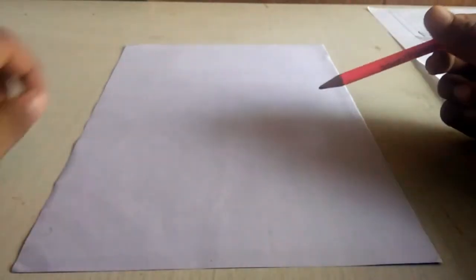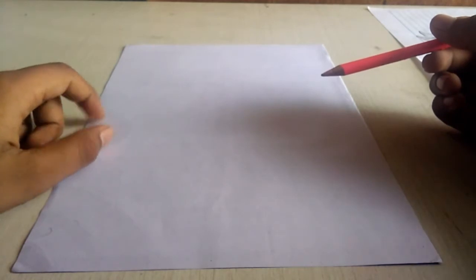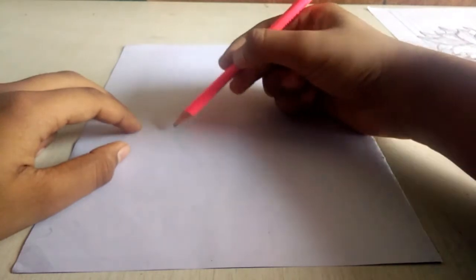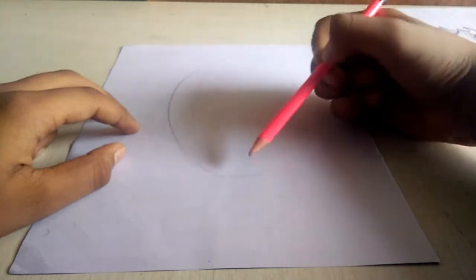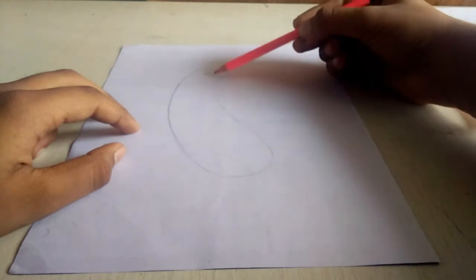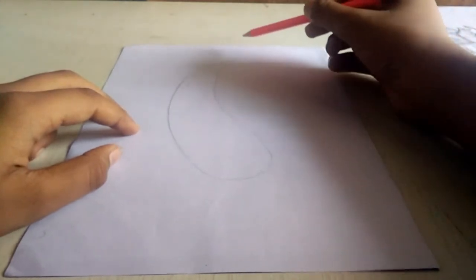So today we are going to draw a koi fish. Let's start with the body. Basically you have to make it like this. I couldn't tell you a reference, but try to keep it as light as you can because then you would have to redraw it, or maybe you're just a master, a pro person, and you can easily draw it in the first go.